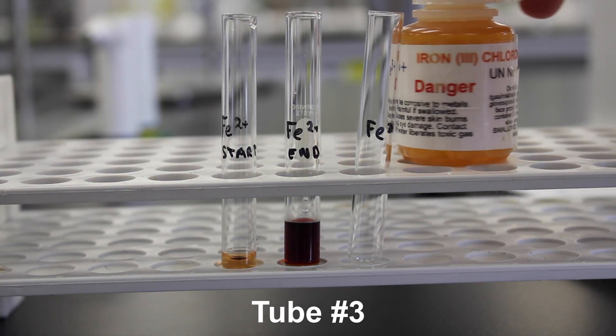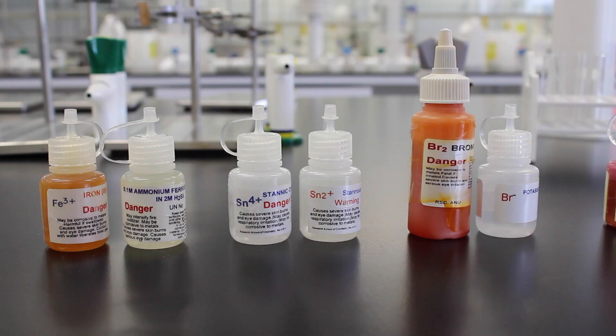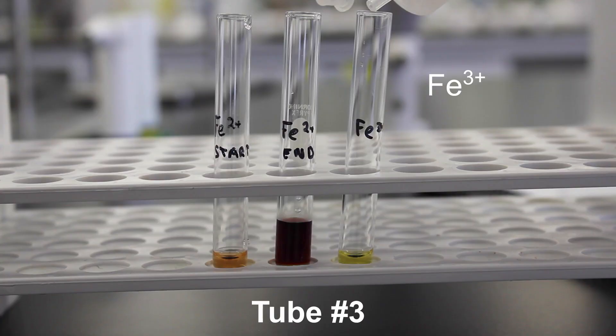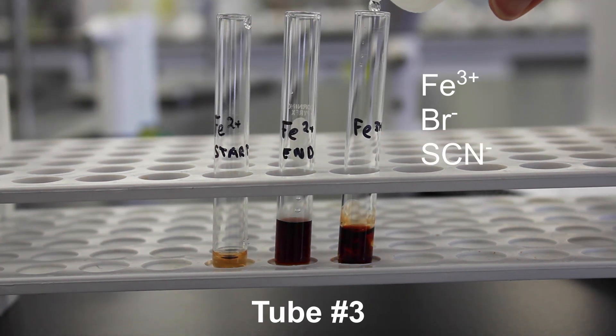Now let's put a solution of iron 3+ into a third test tube and then add some drops of bromide ions. In this instance we'll test with thiocyanate ions again, but because we started with iron 3+, a dark red solution indicates no reaction has taken place because no change has occurred.